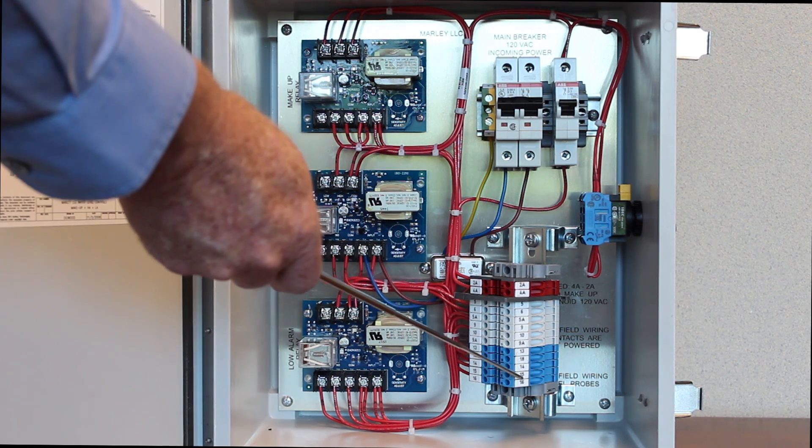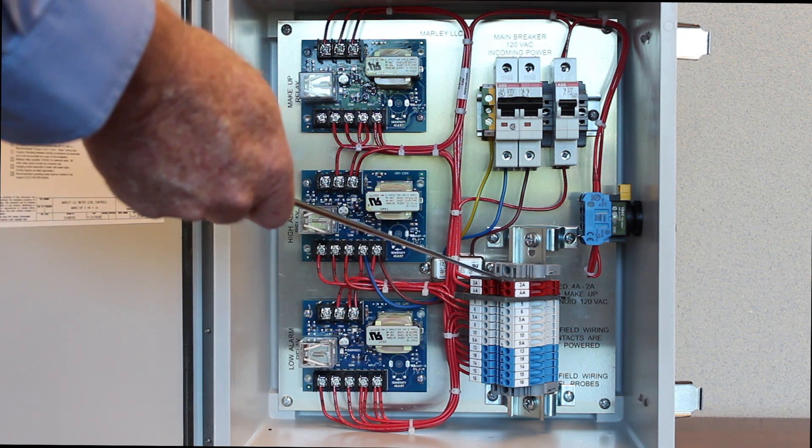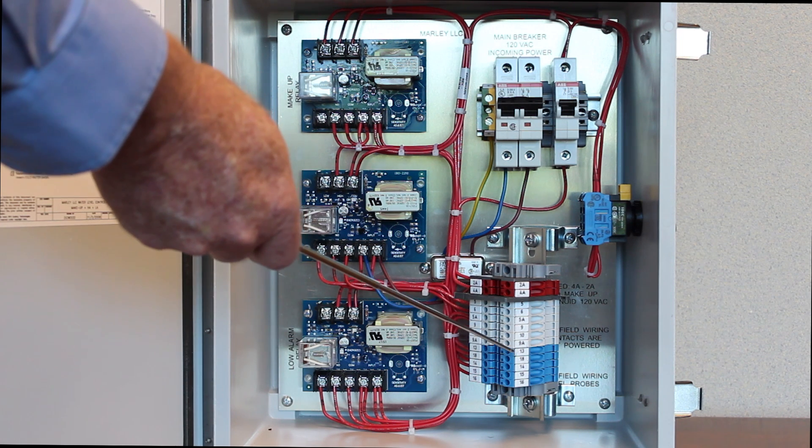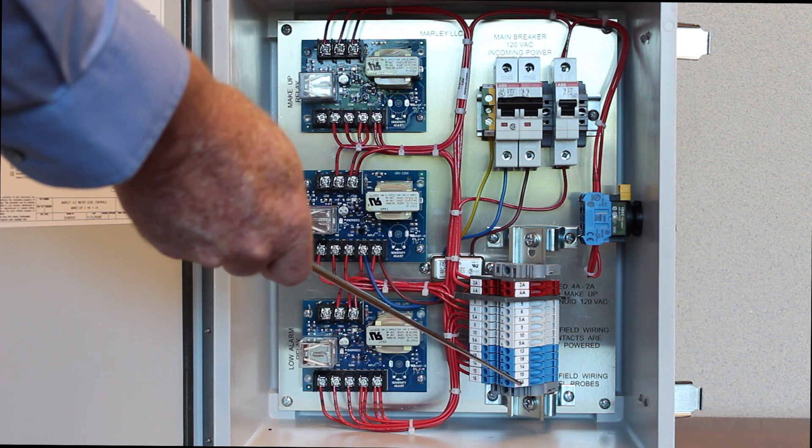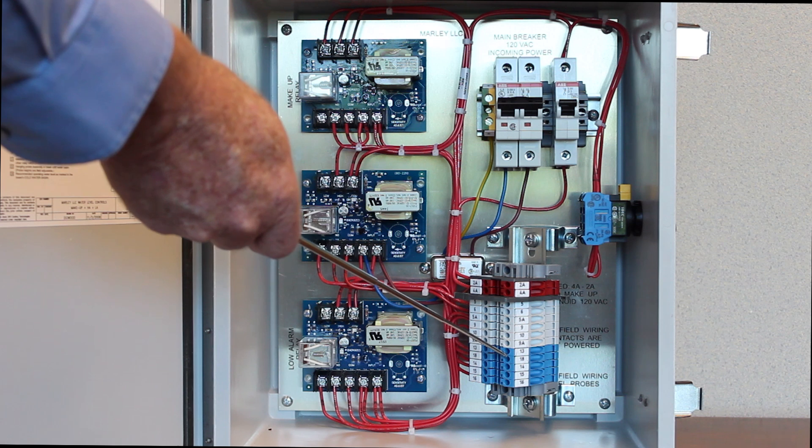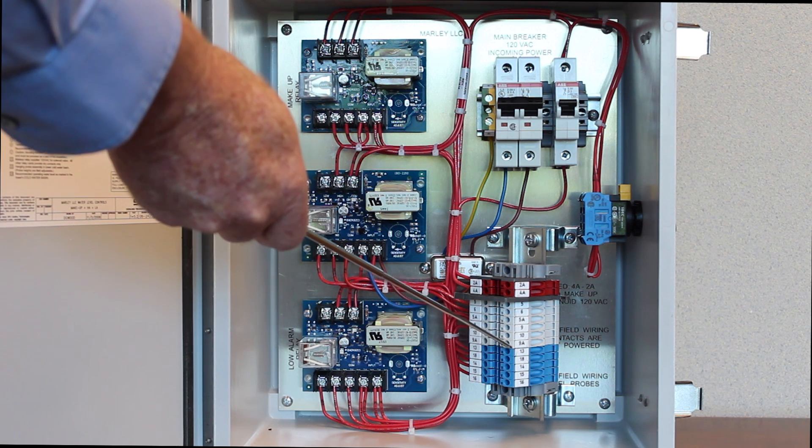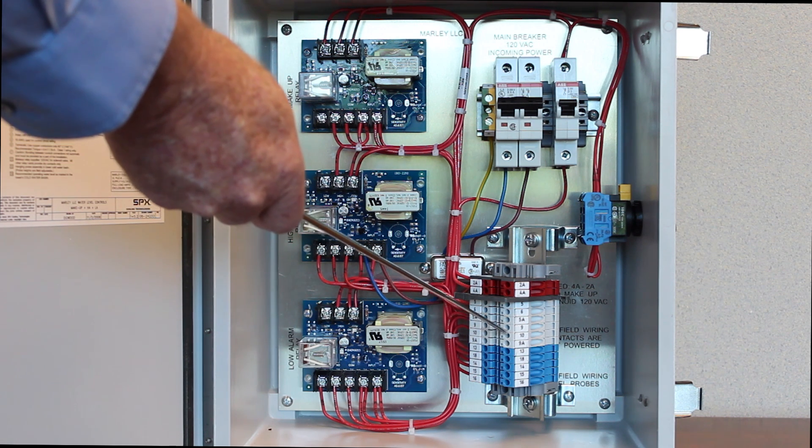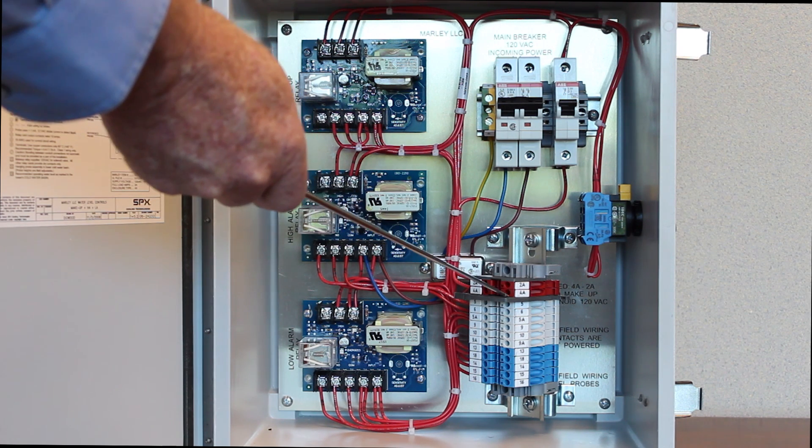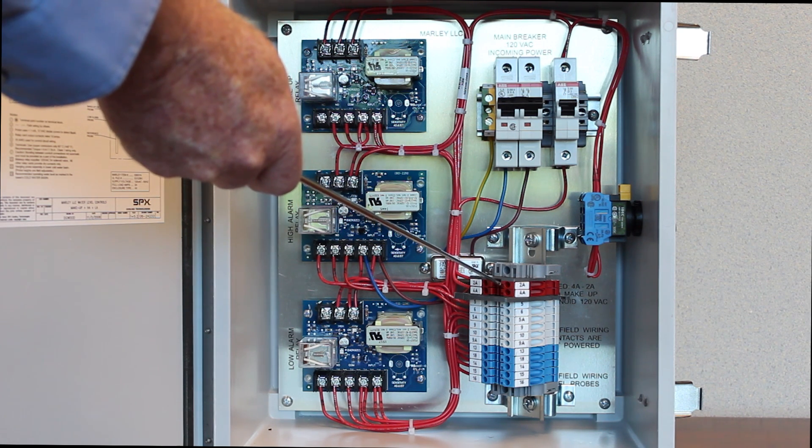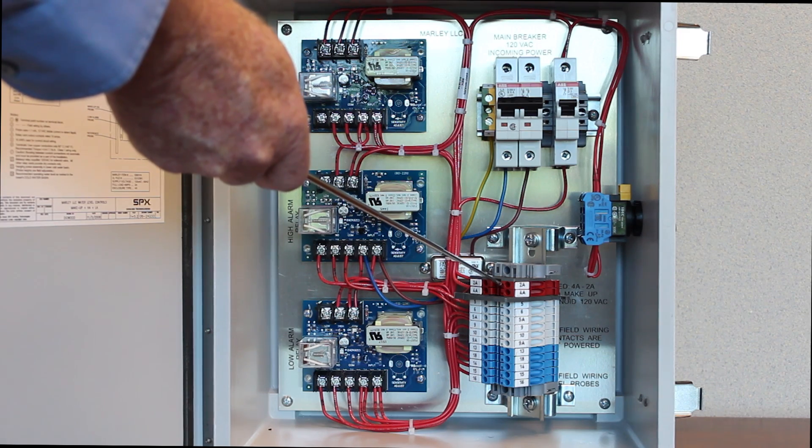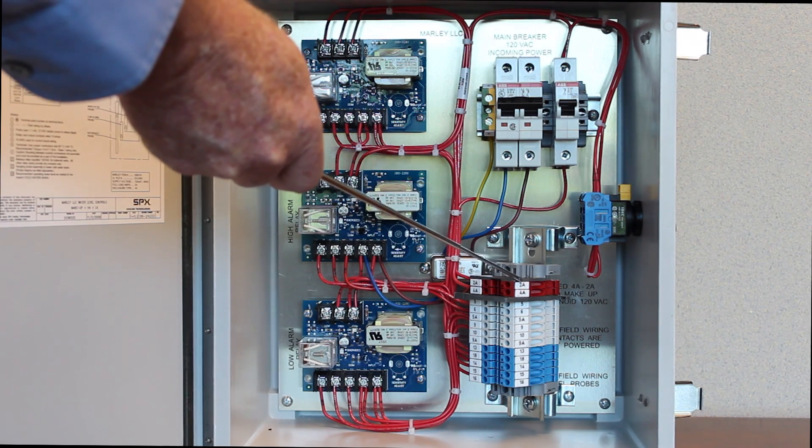Over here to the right we have a user terminal strip. The user terminal strip is used by the electrician to terminate the water level probes on the blue terminal points here, to get the output contacts going back to a building management system on the gray terminal points, and to get 120 volt or 220 volt power out to the solenoid through the red contacts here.